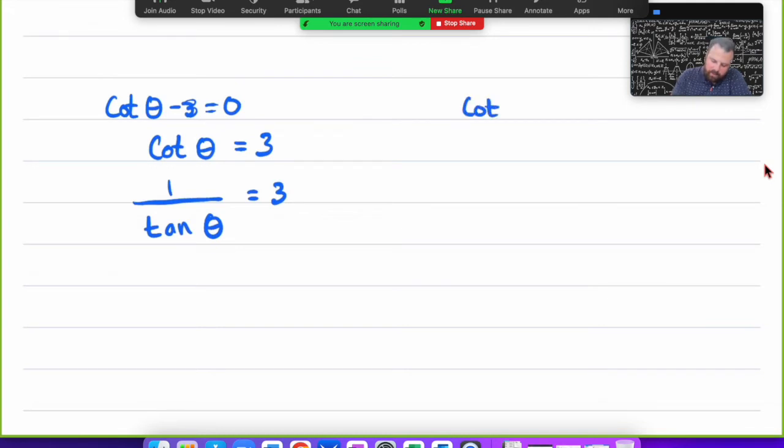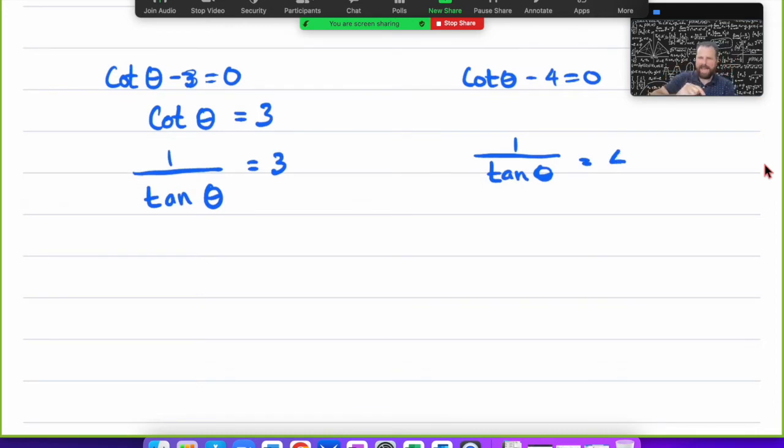In the same way, cot θ - 4 = 0 becomes 1/tan θ = 4. I'm going to take the reciprocals of both sides. The reciprocal of 1/tan is tan/1. So I end up with tan θ = 1/3, and tan θ = 1/4. I'm going to use that to help find my related angle.